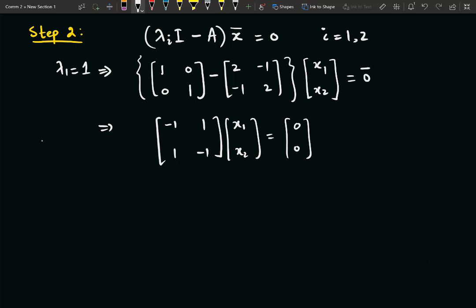So now just simple matrix multiplication. It will result in -x₁ + x₂ = 0, we call it equation 1, and similarly x₁ - x₂ = 0, we call it equation 2. Now from equation 2, it is clear that x₁ = x₂.